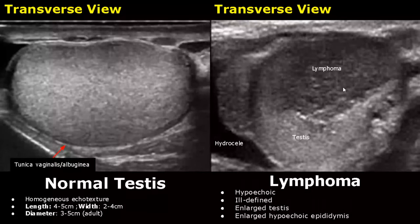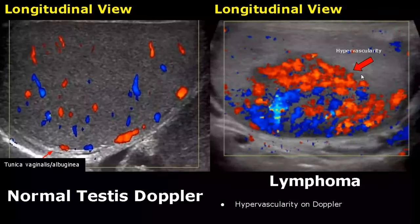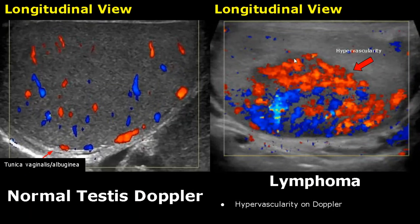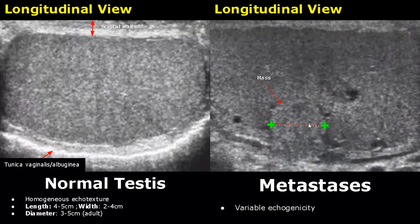Lymphoma is a testicular malignancy which is not very common and can be bilateral. The testis and epididymis will be enlarged. On color Doppler there will be hypervascularity inside the mass. Metastasis to the testis are very rare, have variable echogenicity, and can be bilateral.